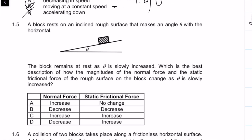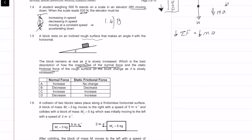Question 1.5: a block rests on a rough inclined surface that makes an angle theta. The block remains at rest as theta is slowly increased. Which best describes how the magnitude of the normal force and frictional force change with theta? I'll start by drawing a free body diagram showing friction, normal force, weight, and the angle theta, with perpendicular and parallel components.